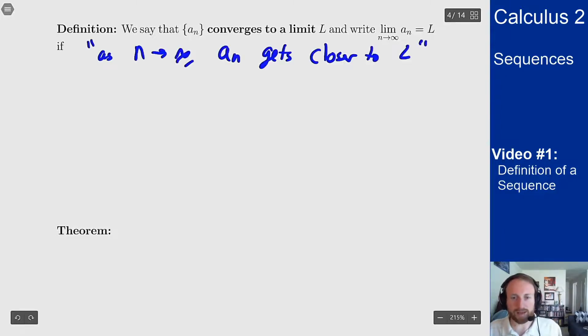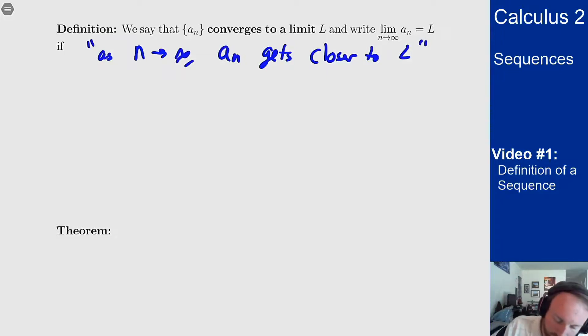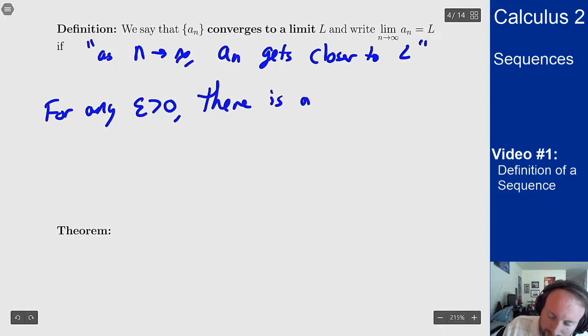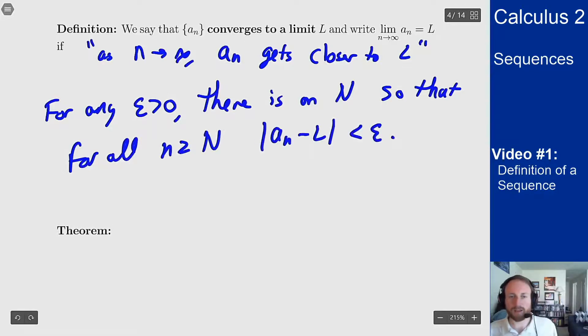The way you actually think about this mathematically is using the formal definition of a limit like we had back in Calc 1. So for any positive epsilon, there is an N so that for all n bigger than that capital N, |an minus L| is less than epsilon.